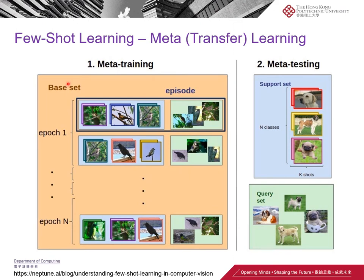Few-shot learning is a task or problem to address, and meta-learning is a framework to address that problem. Meta-learning is sometimes called meta-transfer learning. There is a more general area called transfer learning, which tries to reuse the knowledge or models gained in one domain in a new domain, so you don't have to repeat the whole training process — maybe just fine-tuning some parameters. Meta-learning can be considered one example of transfer learning.